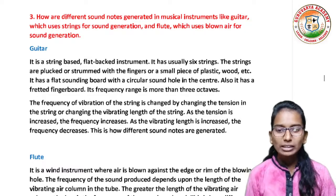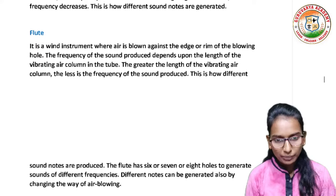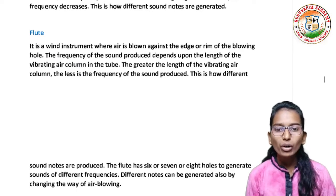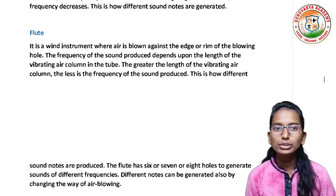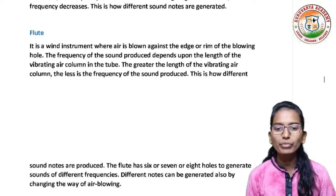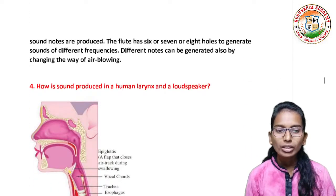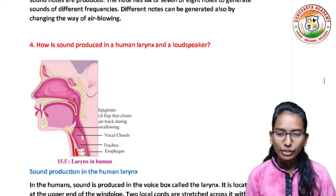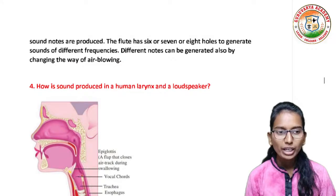The flute is a wind instrument where air is blown against the edge or rim of the blowing hole. The frequency of sound produced depends upon the length of the vibrating air column in the tube. The greater the length of the vibrating air column, the less is the frequency of the sound produced. The flute has six, seven, or eight holes to generate sounds of different frequencies. Different notes can also be generated by changing the way air is flowing.